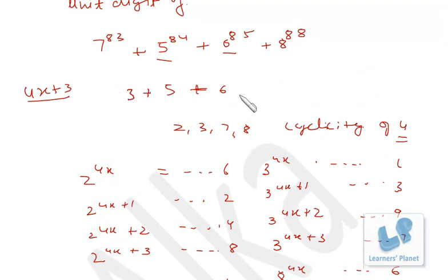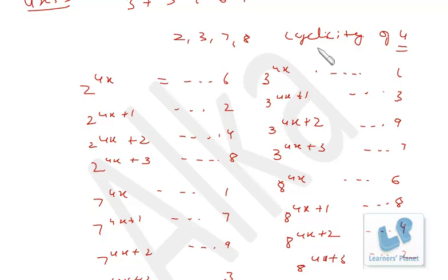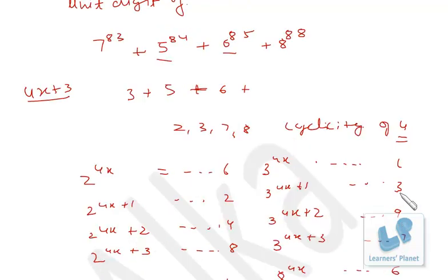Then 8 raised to 88: 88 is in the 4x format, so 8 raised to 4x will end in 6. Write 6.